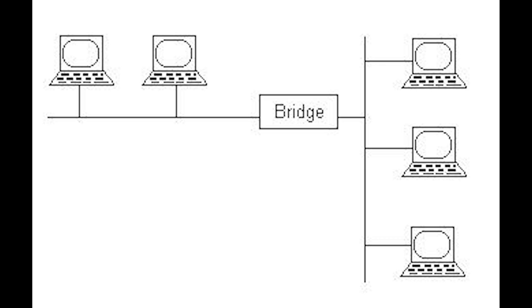This video is on bridge networking. A bridge is a device that works in Layer 2 of the OSI model and aggregates networks into a single network. It simply connects two or more separate networks as if they were a single network. A simple bridge connects two network segments, typically by operating transparently and deciding on a frame-by-frame basis whether or not to forward traffic from one network to another.